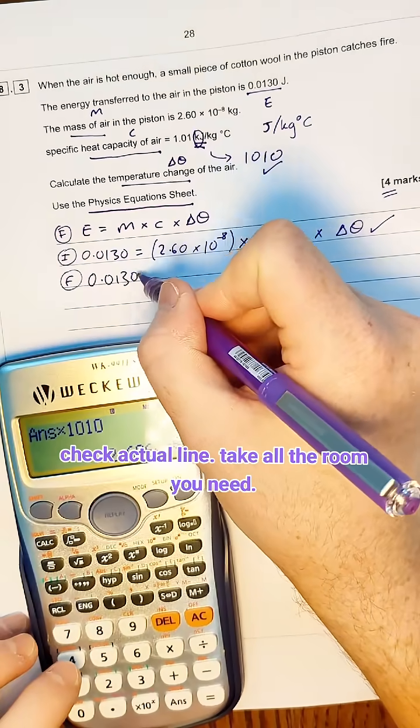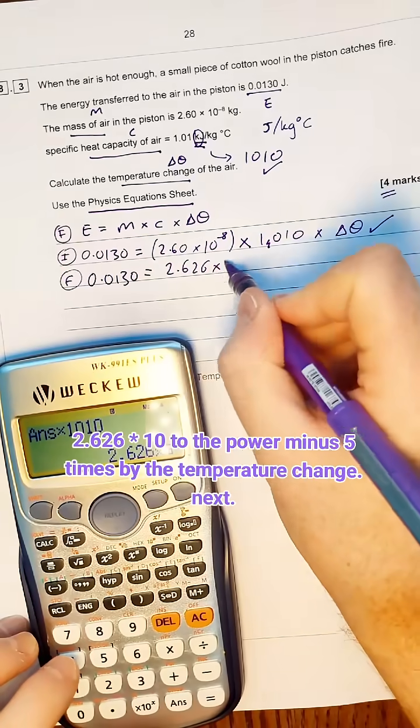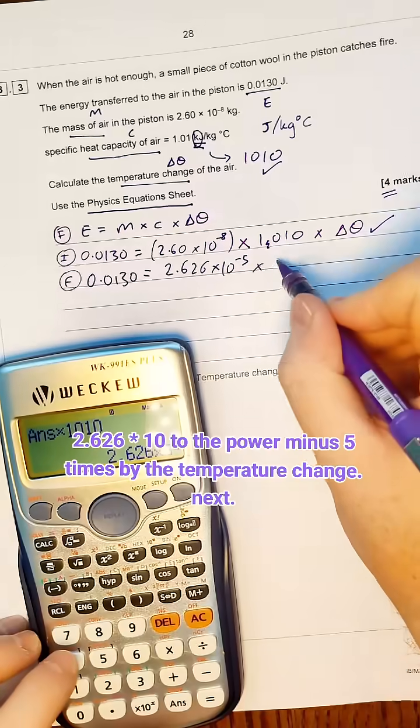So I'm going to rewrite everything the same, take an extra line, take all the room you need. 2.626 times 10 to the power of minus 5 times by the temperature change.